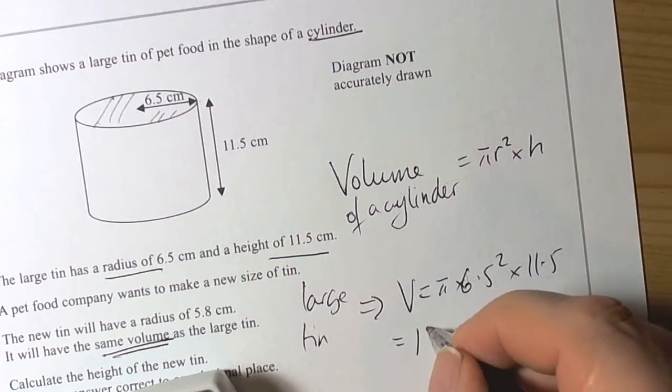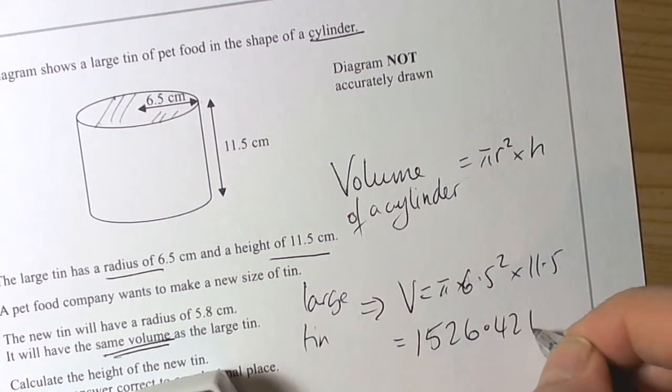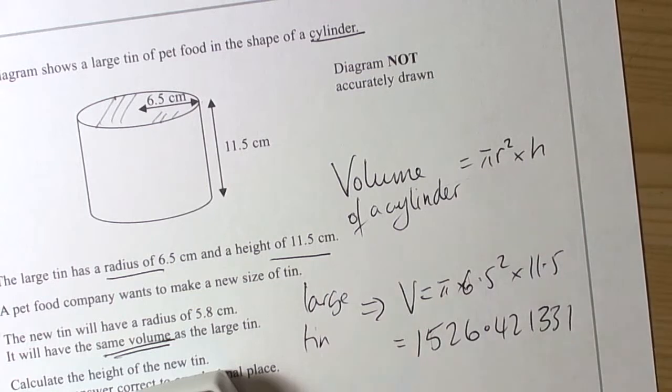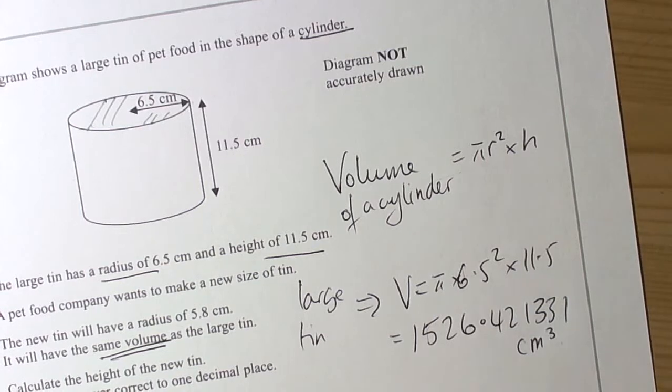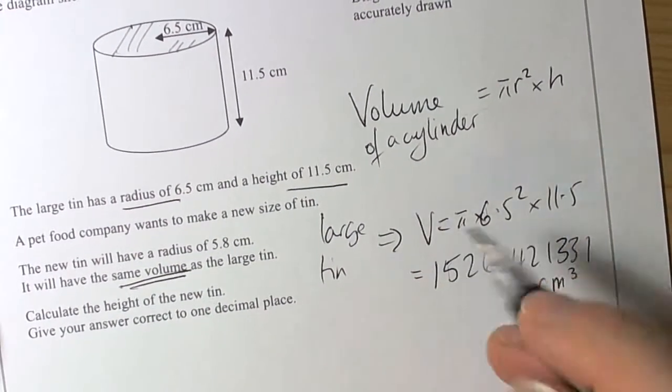So we're not rounding yet. So that's in cubic centimeters, because we're talking about three dimensions volume. So that's the volume of the large tin. And they're telling us that the new tin will have the same volume.